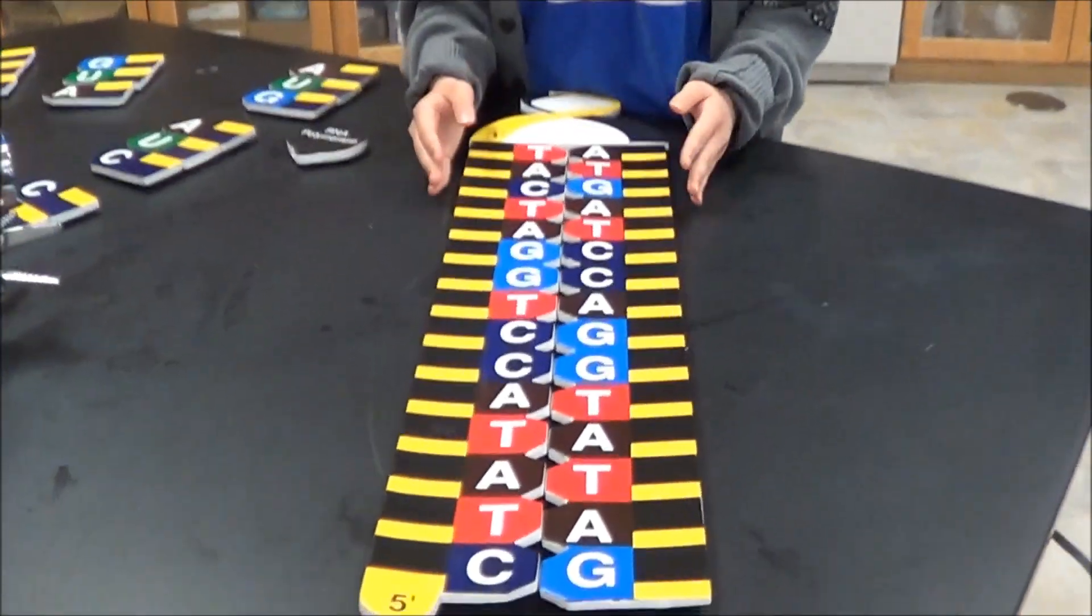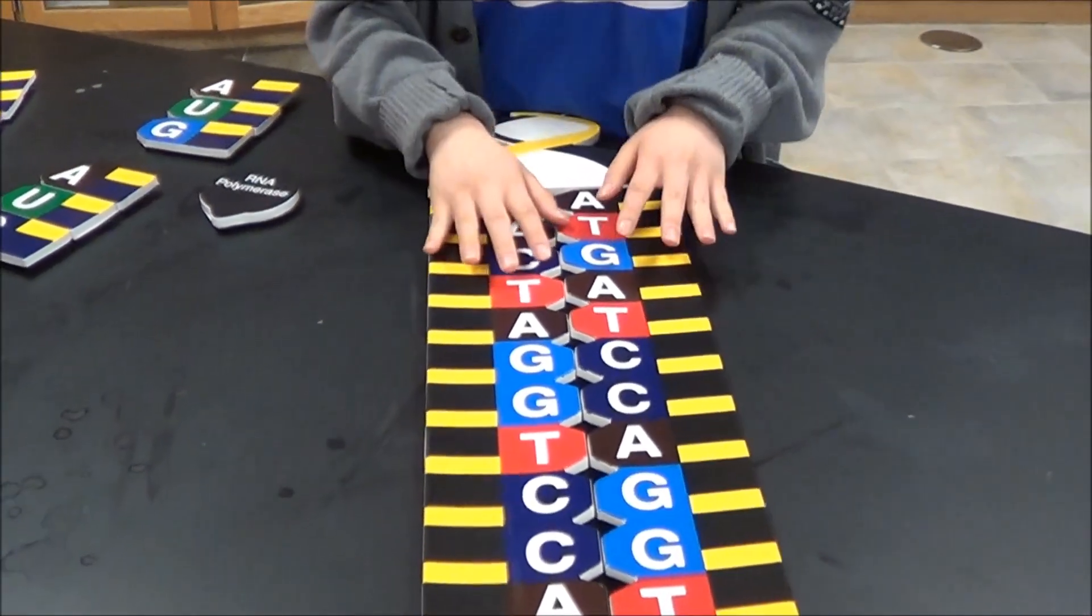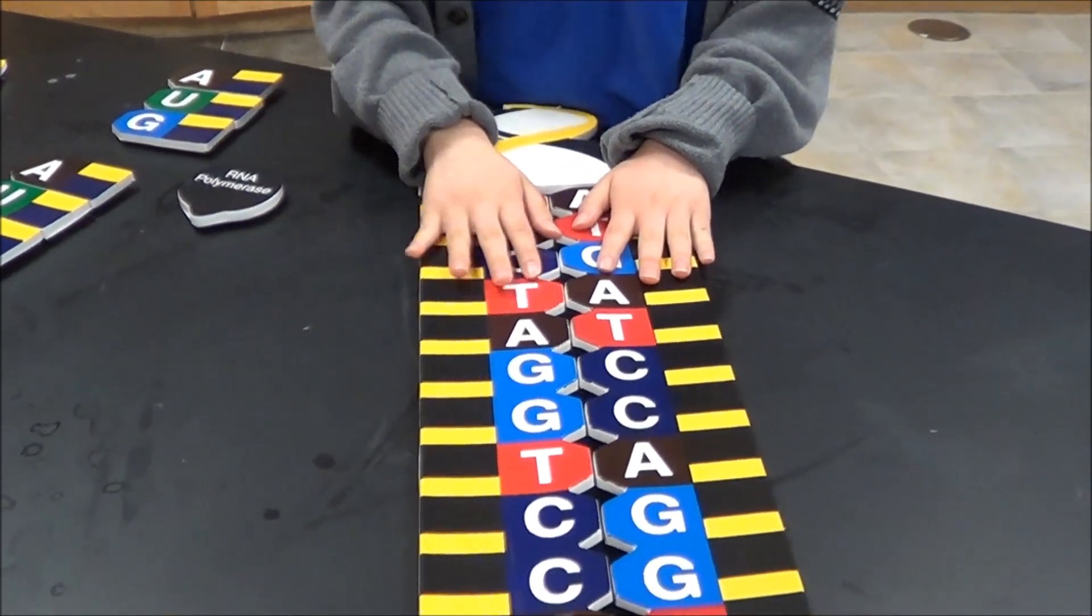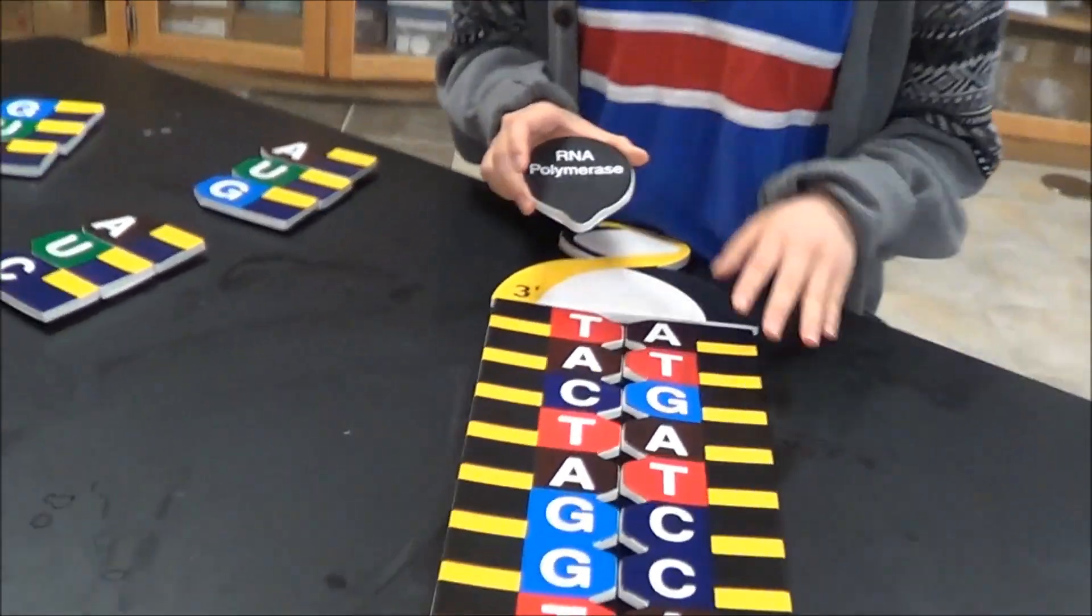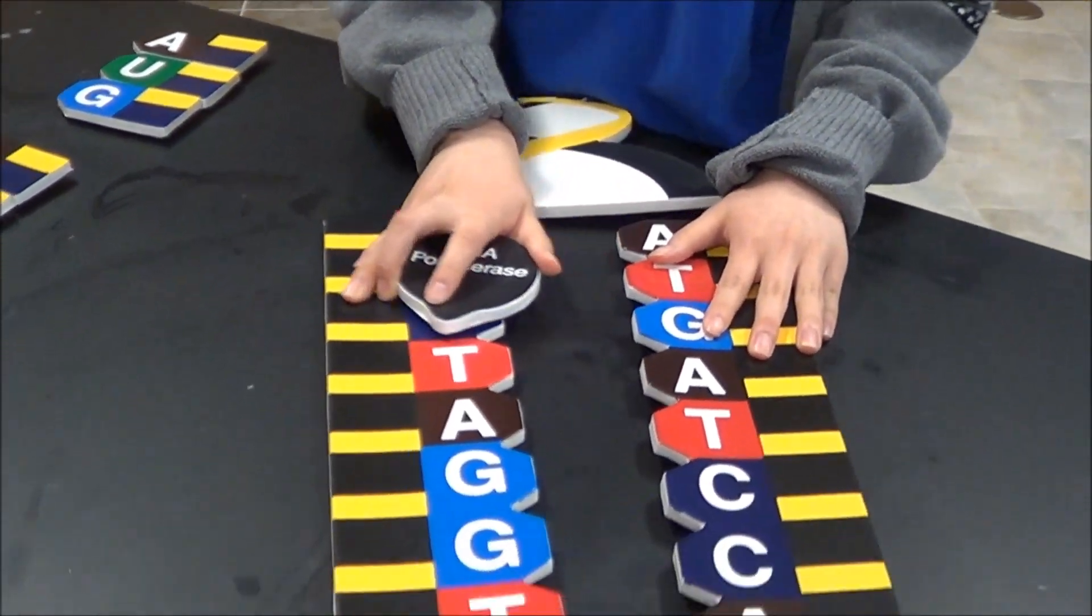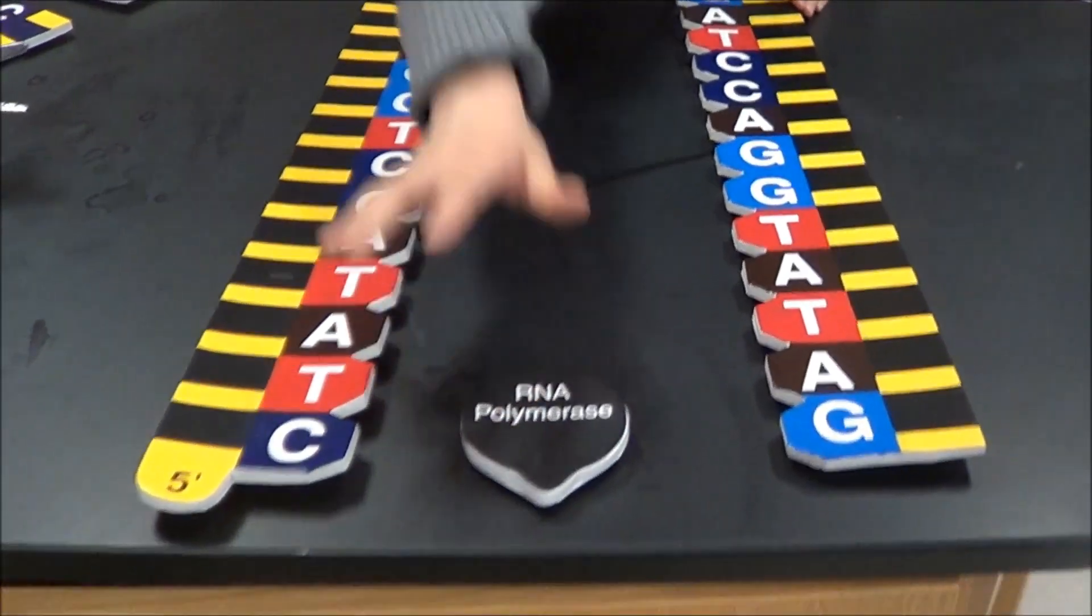So in the beginning we have a DNA strand and DNA will make RNA and RNA will make proteins. So first, in order to do that, the RNA polymerase will cut up the DNA strand in half. And we'll have them go down like this.